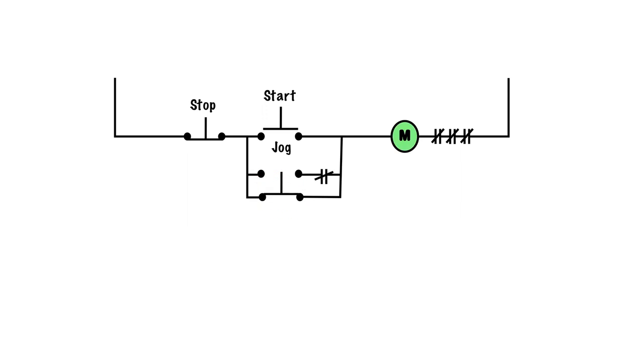And the whole purpose of a jog circuit is to momentarily run a motor so you can bump it or you can just have it run for a moment. As opposed to when we hit the start here, this ran continually. We only want this to run as long as we're pushing down on the jog button.